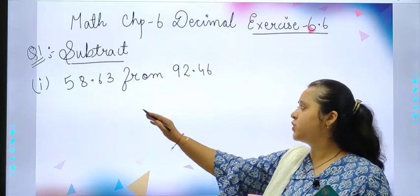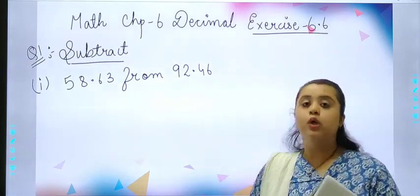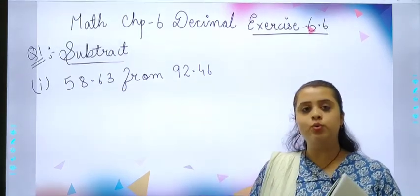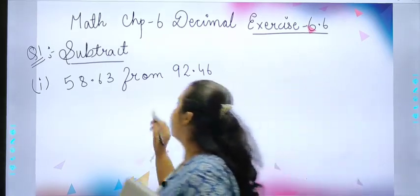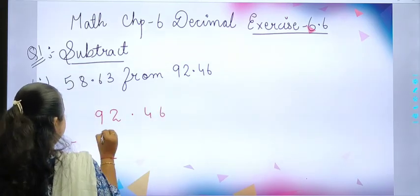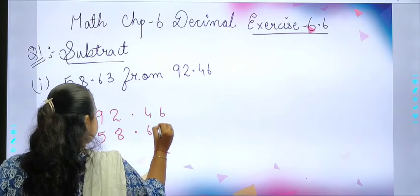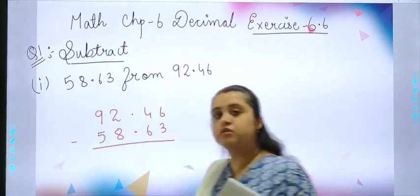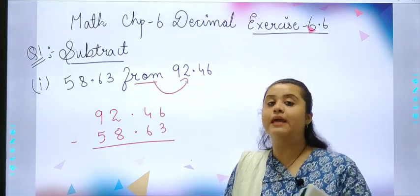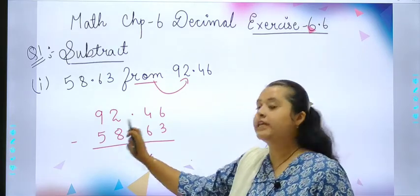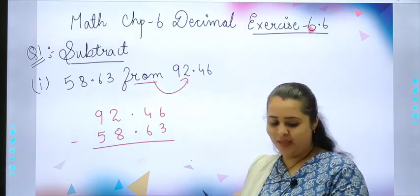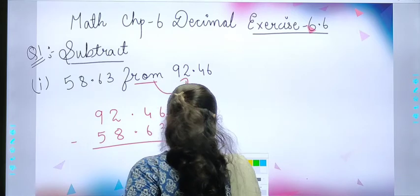Let's start students. 58.63 from 92.46. Which term will be writing first? Now we will be writing first 92.46 minus 58.63. Always remember, from ke baadwala jo term, that will be coming at first. That is 92.46 minus 58.63. Let's start with subtraction.